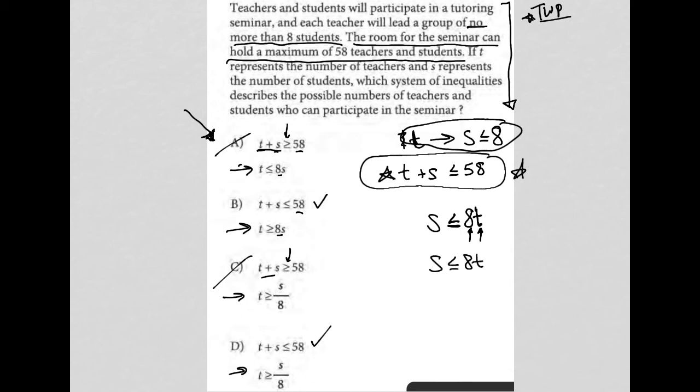But when I look at my answer choices, it's not based upon S. S is not isolated. I have T isolated here. So I'm going to divide both sides by eight so that I can isolate my T. And then T, this is opening towards the T. So T is greater than or equal to S over eight is how I translate that.